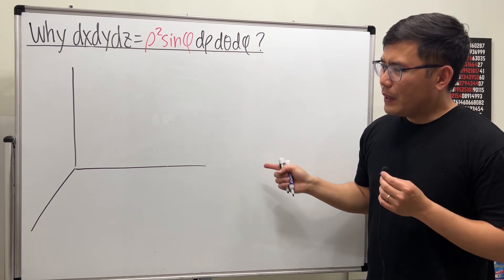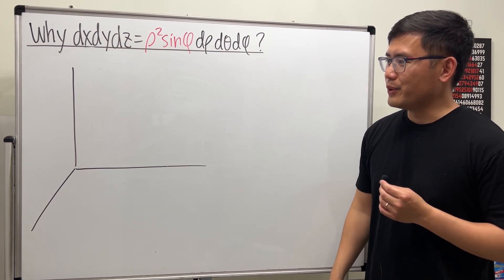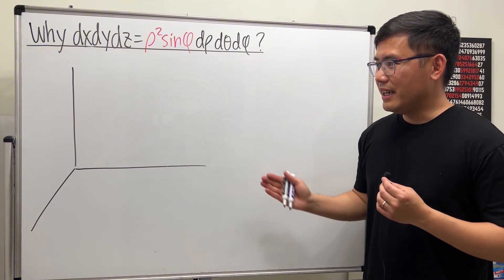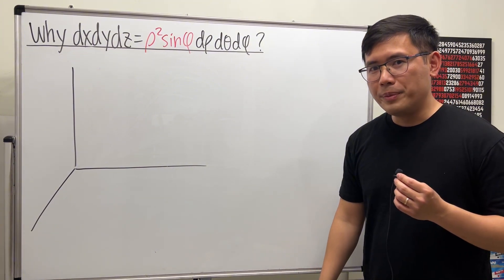It took me a very long time to see how to draw the pictures for you to make this clear, so hopefully you find this to be clear and helpful. I'll show you the Jacobian way next time.